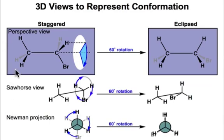The three views on the left represent what's known as the staggered conformation. The three views on the right represent what's known as the eclipsed conformation. The relationship between these two involves a 60 degree torsional rotation about the carbon-carbon bond.